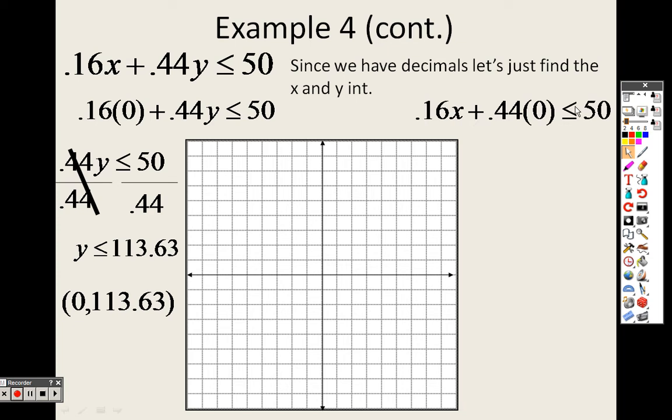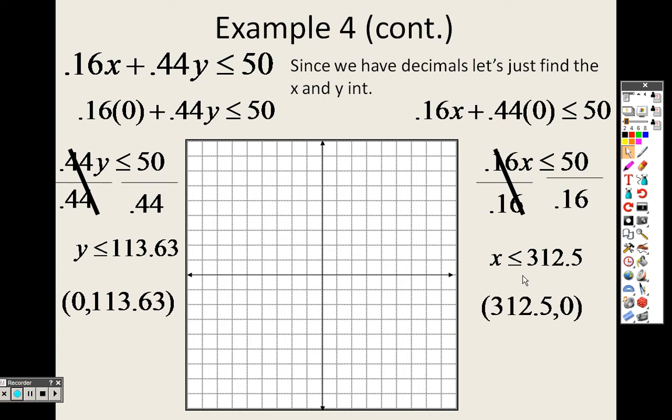Next up, if I plug in a 0 for Y, I have 0.16X. So I can divide both sides by 0.16, and I end up getting 312.5. So that means I have 312.5, 0.